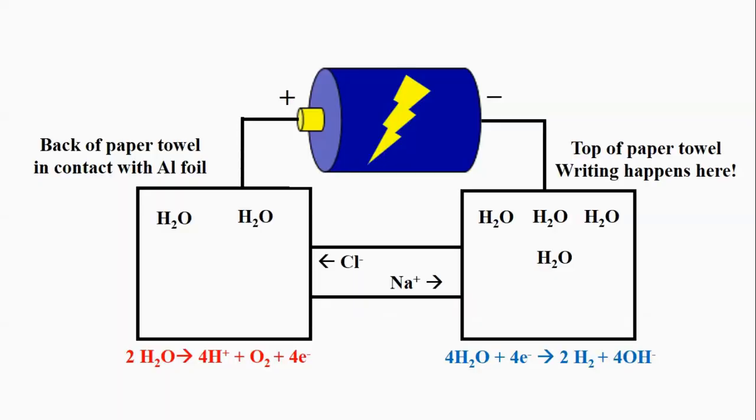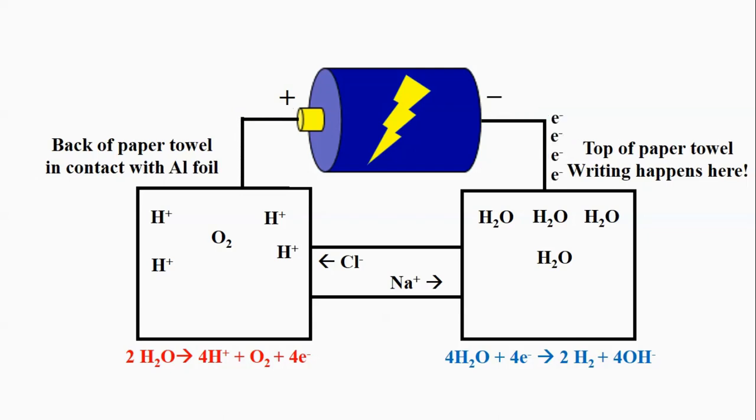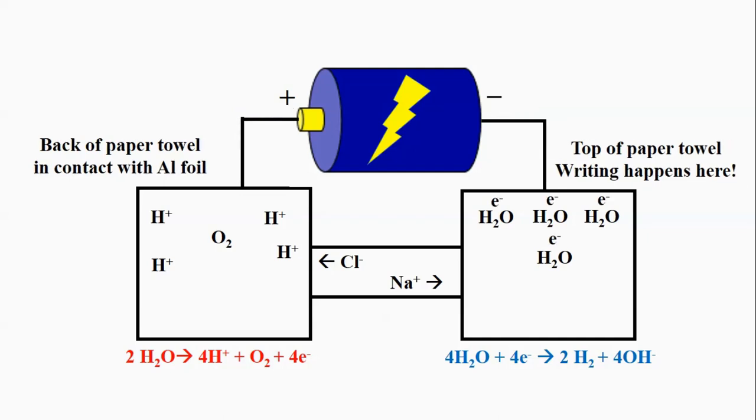Let's talk a little bit about the science behind how this experiment works. The battery pulls electrons out of water molecules in contact with the aluminum foil. Look over here on the left. You see those two water molecules? Now they're colored red. The battery pulls electrons from these water molecules forming protons, electrons, and oxygen gas. The electrons formed move through the wire, through the battery, and to the top of the paper towel.